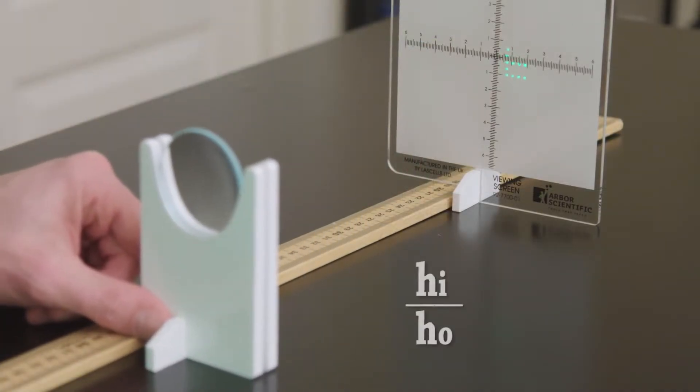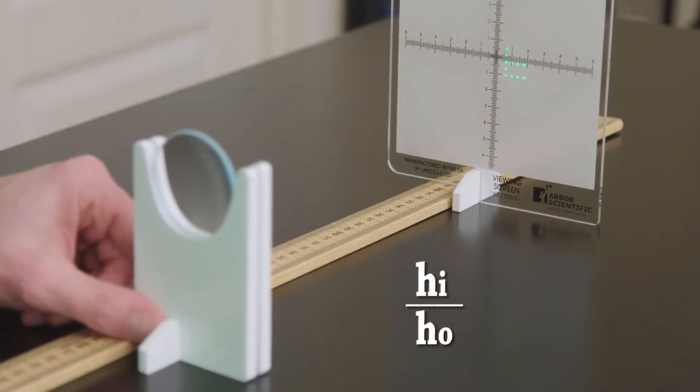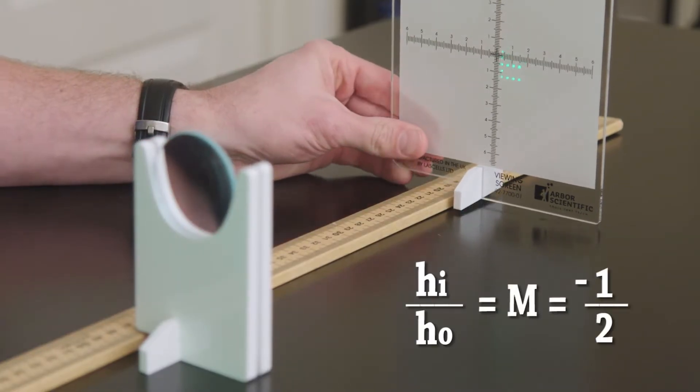This image is one-half the height of my object, but upside down, giving me a magnification of negative one-half.